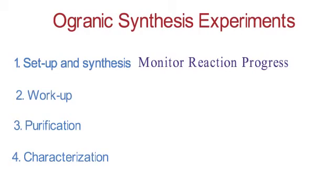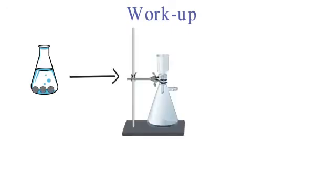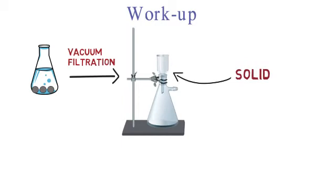Once the reaction is done, the next step is workup, which includes isolating the product from the reaction mixture. Let's go over a few examples. If the product precipitates out of the reaction, then one can simply use vacuum filtration to separate the solids from liquid. The mixture is passed through a funnel, the solid stays on the funnel, while the liquid passes through by vacuum. If the reaction has been heating, cooling down the reaction mixture might also result in product precipitation, which again can be collected using vacuum filtration.